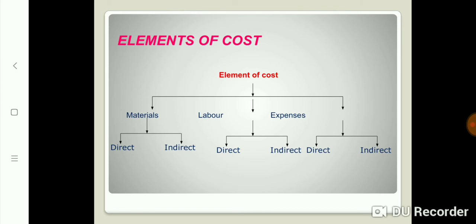While studying cost accounting, elements of costs are important. Basically, cost includes three basic elements: material, labor, and expenses. Each element includes direct and indirect things — direct material, indirect material, direct labor, indirect labor, direct expenses and indirect expenses. Material means the substance from which the finished product is made. Direct material is one which can be directly or easily identified in the product. Indirect material is one which cannot be easily identified in the product.